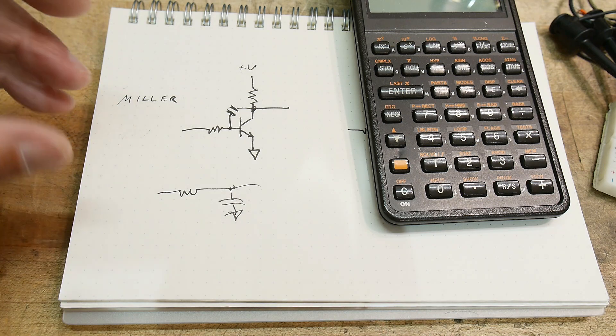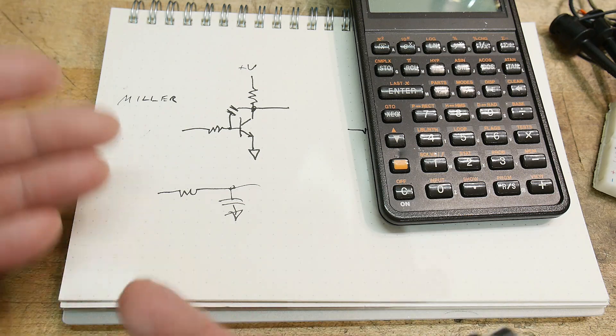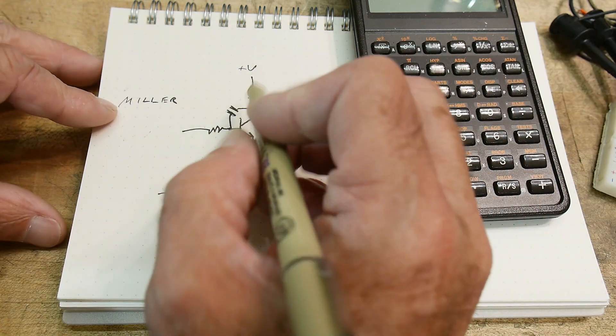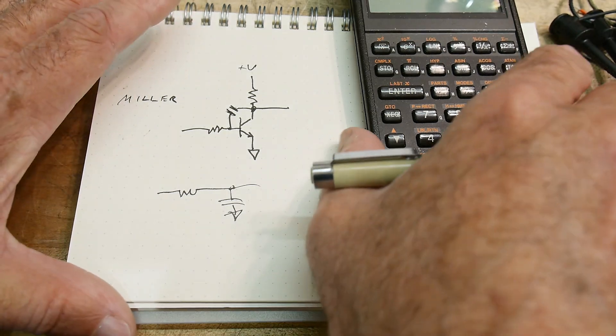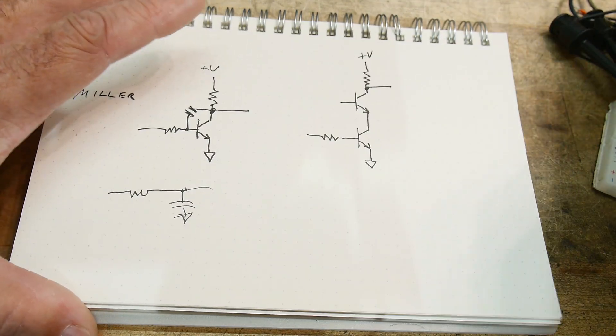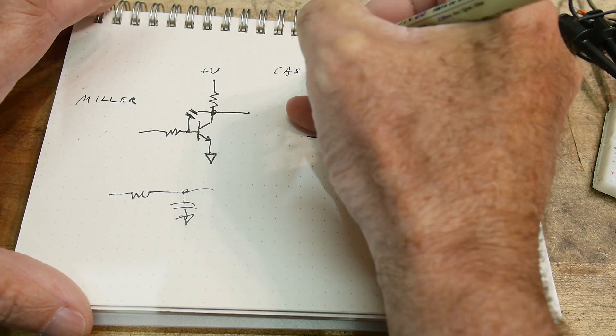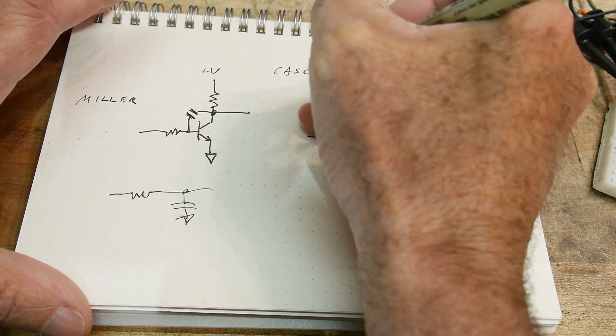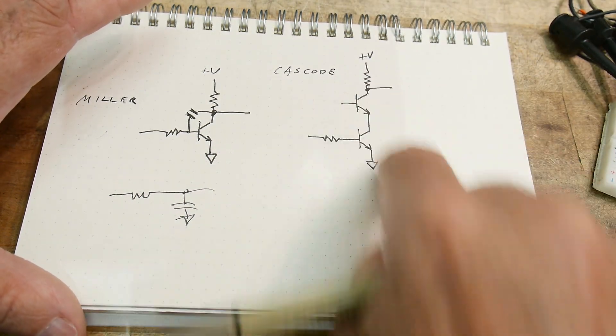So how can you circumnavigate the Miller Effect? Is there any way to trick it into trying to ignore this capacitor? Well, there's something called a cascode configuration. So a cascode configuration is two transistors wired like this.